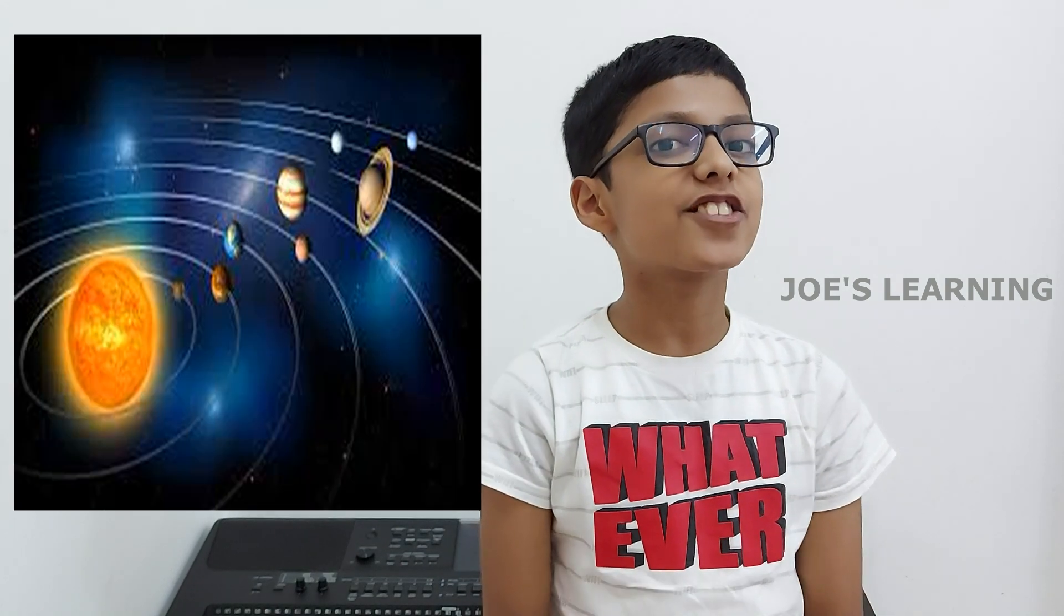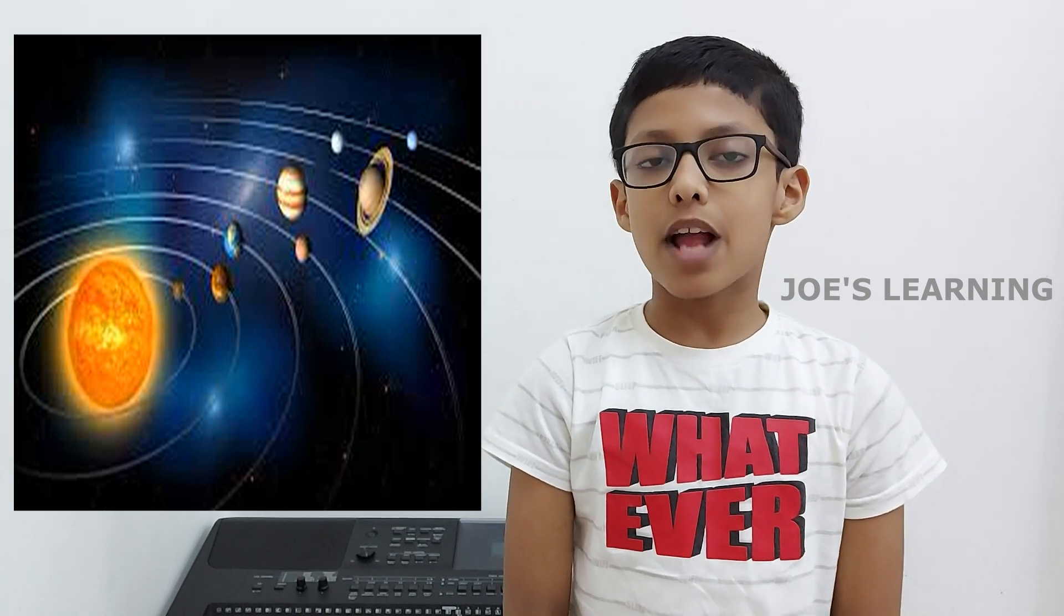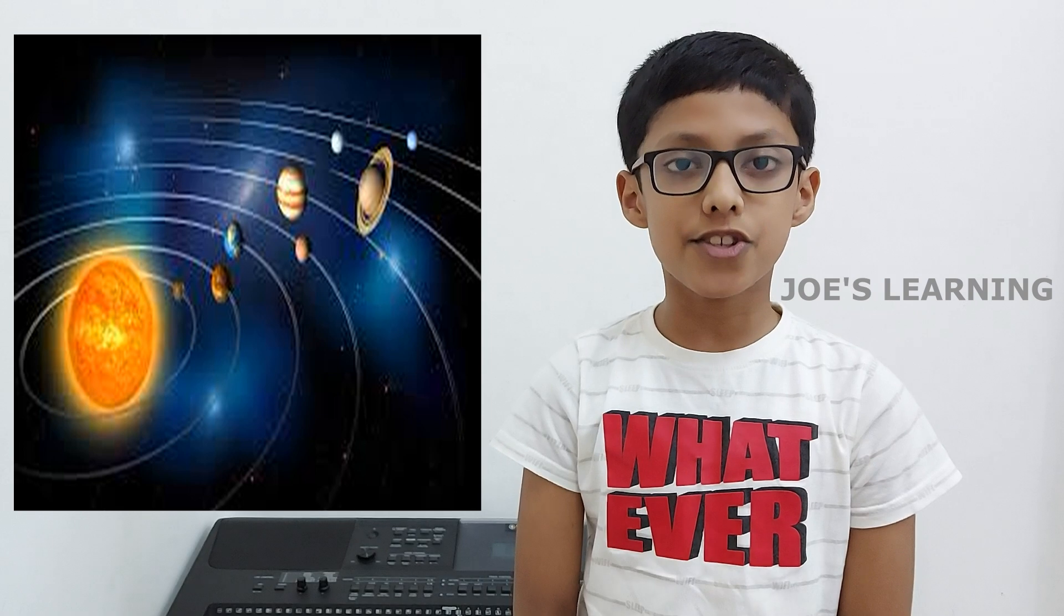When we look up at the sky, we can see that all the planets and stars appear to be moving eastwards across the sky. All the planets spin like a top and at the same time revolve around the Sun.